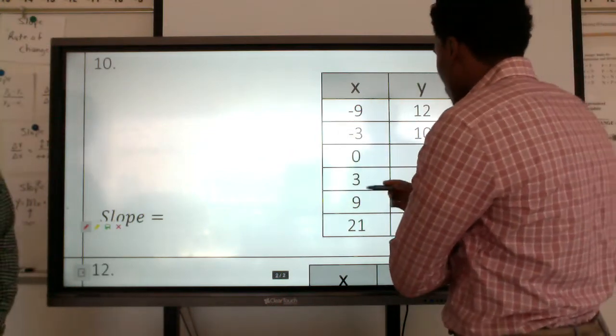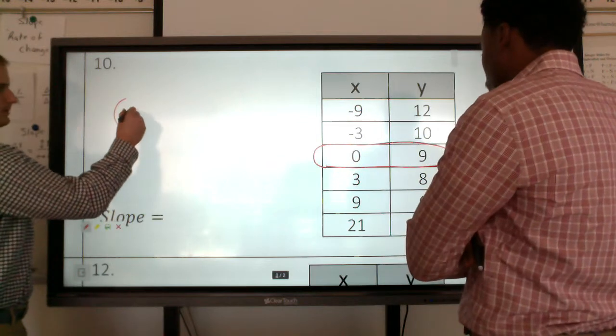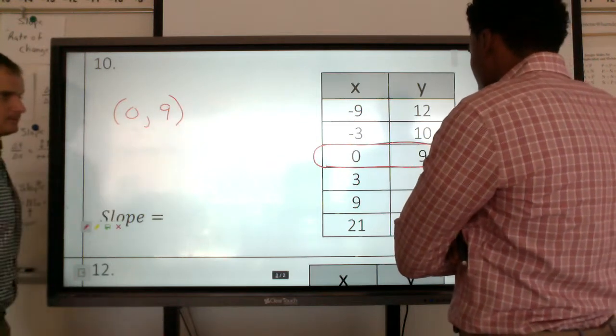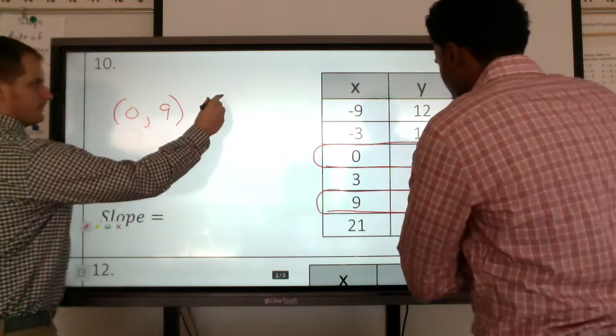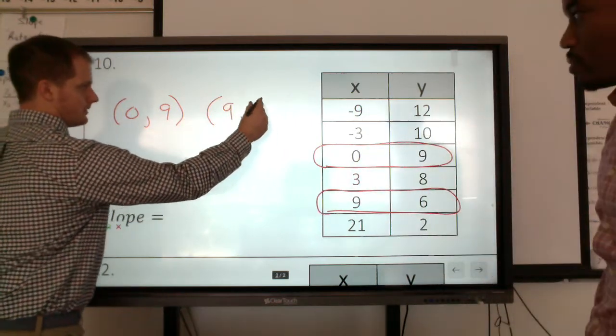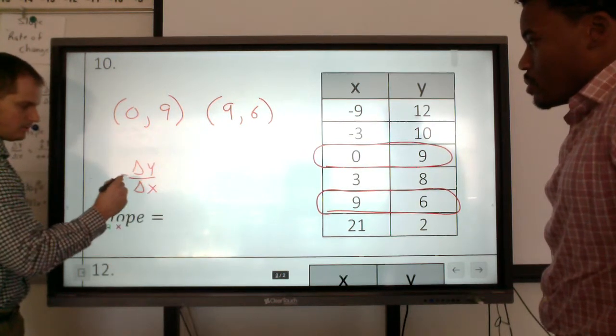All right. You know, I'm going to go with 0, 9. Oh, I like that. Like 0, 9. 0, 9. And I'm going to go with 9, 6. All right. So again, we have our two points. We can say this is change in y over change in x. Again, that is our slope. Simone method. Ready for this? I'm ready. All right.